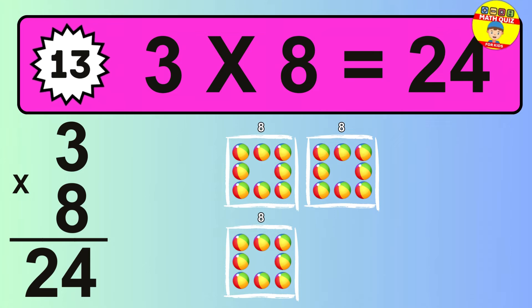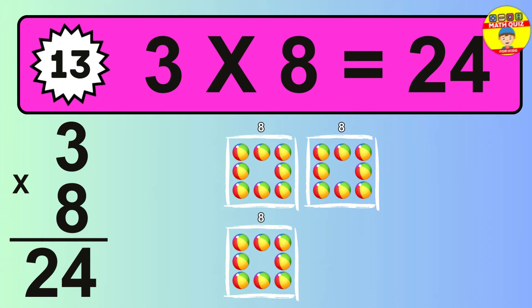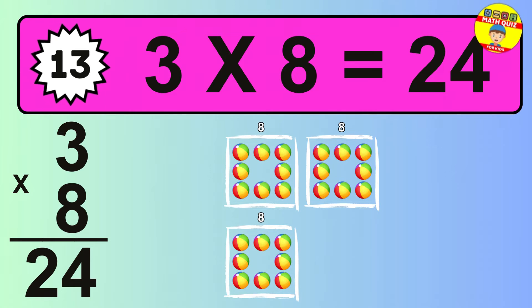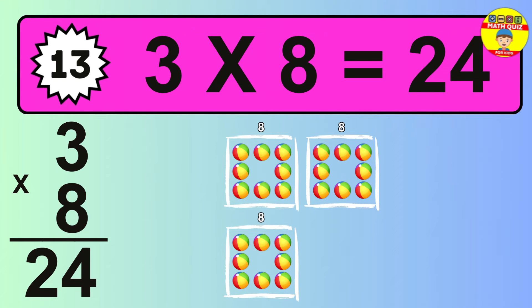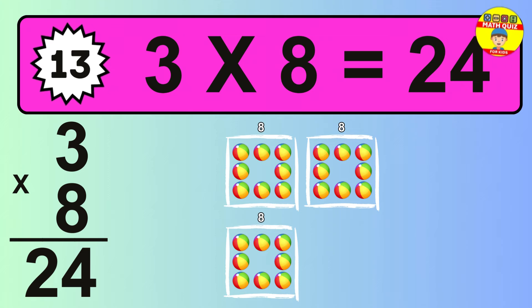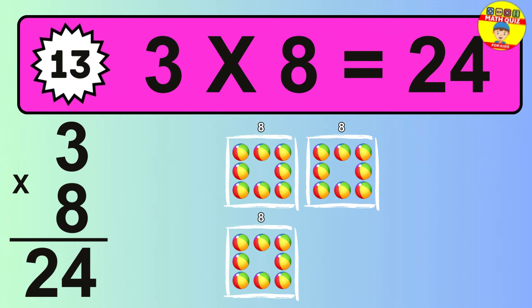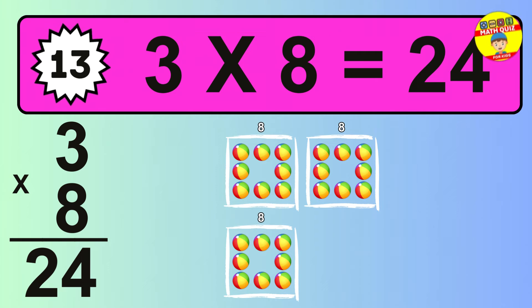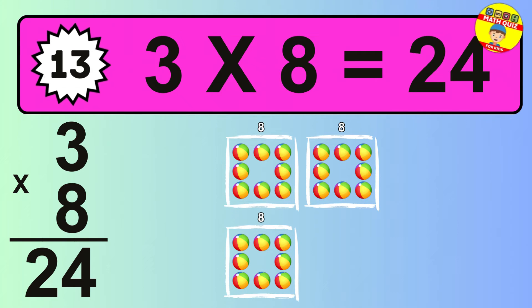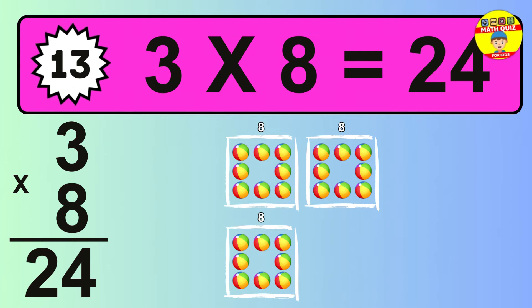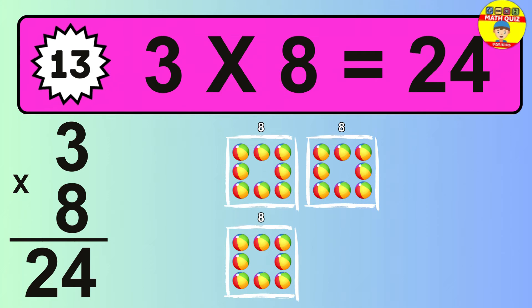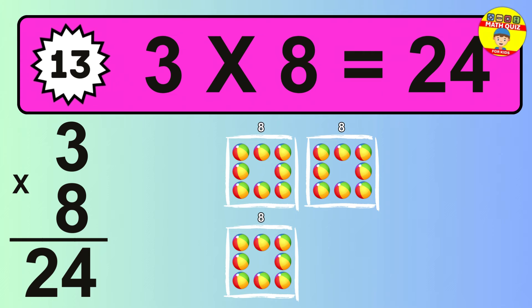Question 13. The answer is 3 times 8 is 24. To calculate, we have 3 groups with 8 balls each one. So, how many balls do we have? 24 balls.